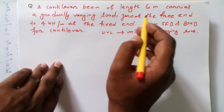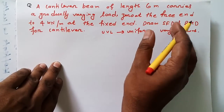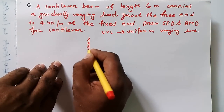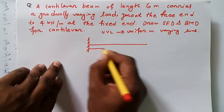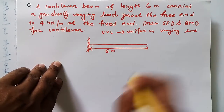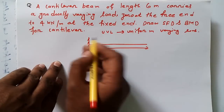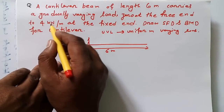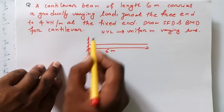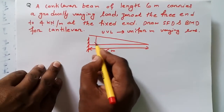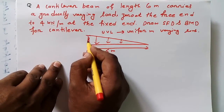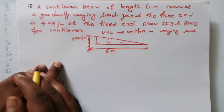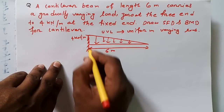Here is the question: a cantilever beam is 6 meters long and carries a gradually varying load. Let me draw the cantilever beam — the length of this beam is 6 meters. The gradually varying load is 4 kilo Newton per meter at the fixed end, going down to zero at the free end.